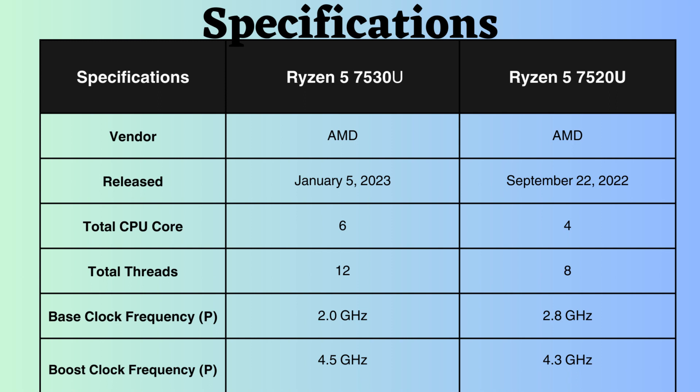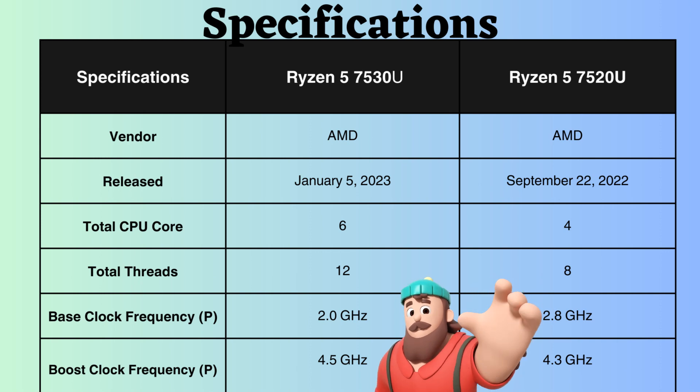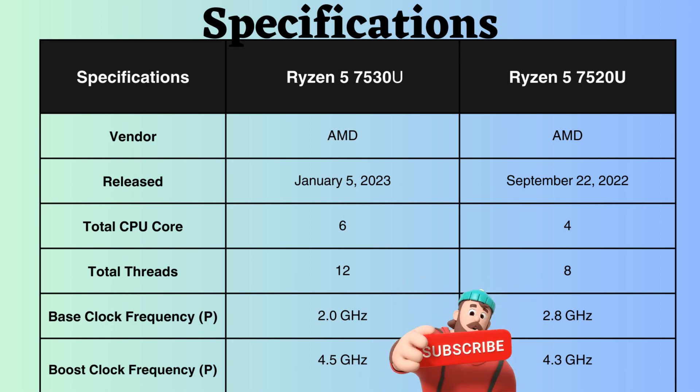Although the base clock frequency of the Ryzen 5 7530U is slightly lower than that of the Ryzen 5 7520U, the higher core count in the Ryzen 7530U results in better overall performance. Conversely, the boost clock frequency of the Ryzen 5 7520U is slightly lower than that of the Ryzen 5 7530U. Consequently, under heavy CPU loads, the Ryzen 5 7530U outperforms the Ryzen 5 7520U.